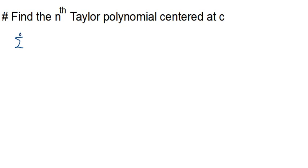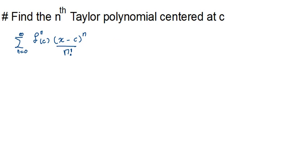The Taylor series formula goes from n equals 0 to infinity: it's f to the n of C, multiplied by (x minus C) to the power n, divided by n factorial. In the Maclaurin case we just remove C and it becomes x to the power n, because for a Maclaurin series C is 0 — it's a Maclaurin polynomial centered at 0.